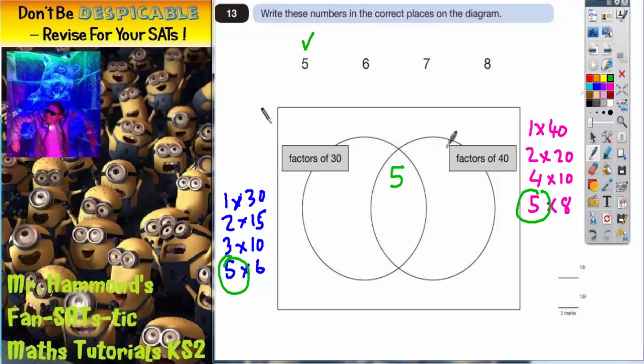Now let's try 6. The number 6 is a factor of 30 but as you can see it is not in the list of factors of 40. So number 6 is only a factor of 30 so number 6 needs to go in this circle.